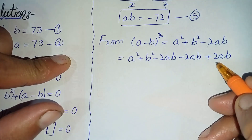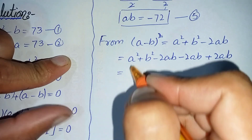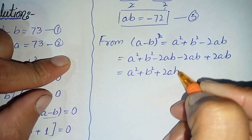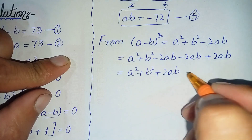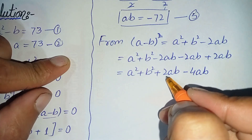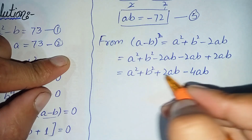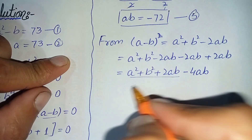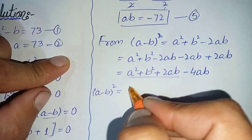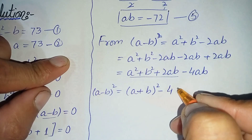Rearranging these terms, we get (a squared plus b squared plus 2ab) minus 4ab. The first part is the algebraic identity (a plus b) squared, equal to a squared plus b squared plus 2ab. So we can write: (a minus b) squared equals (a plus b) squared minus 4ab.